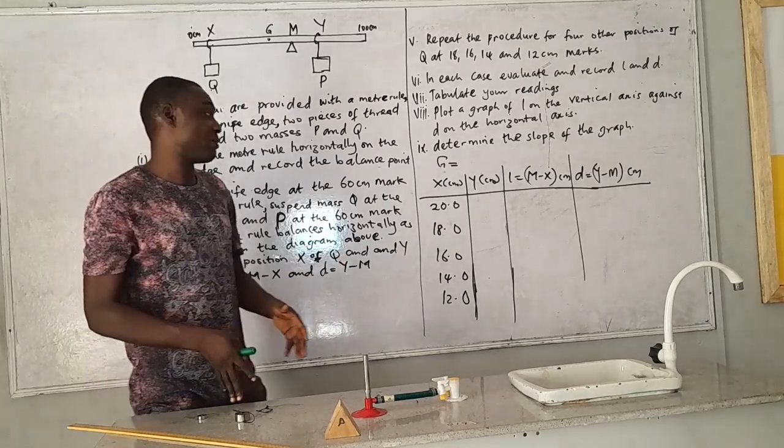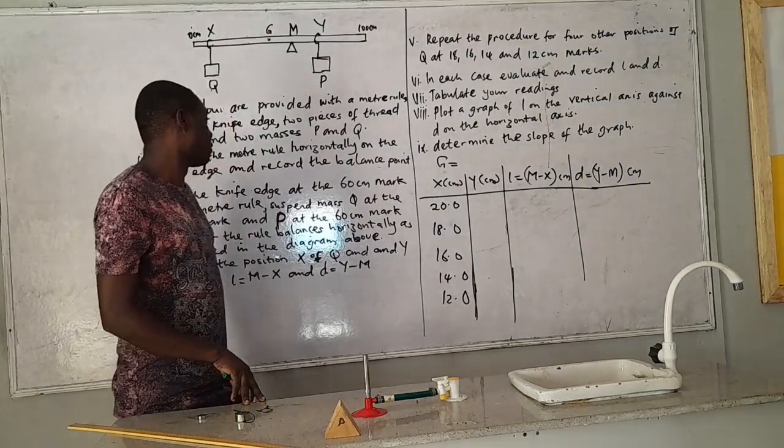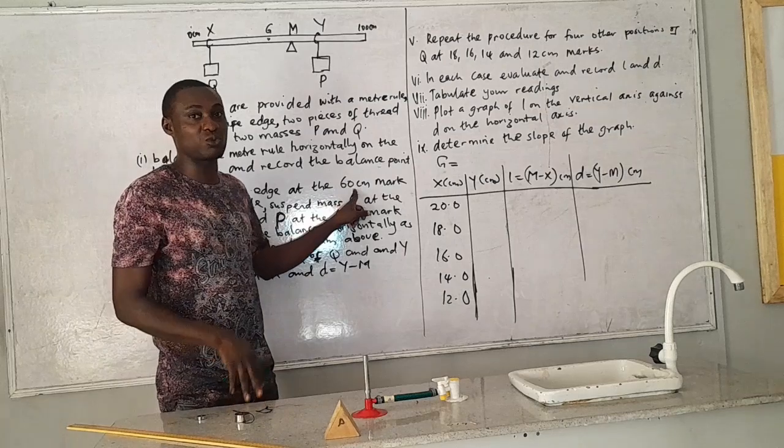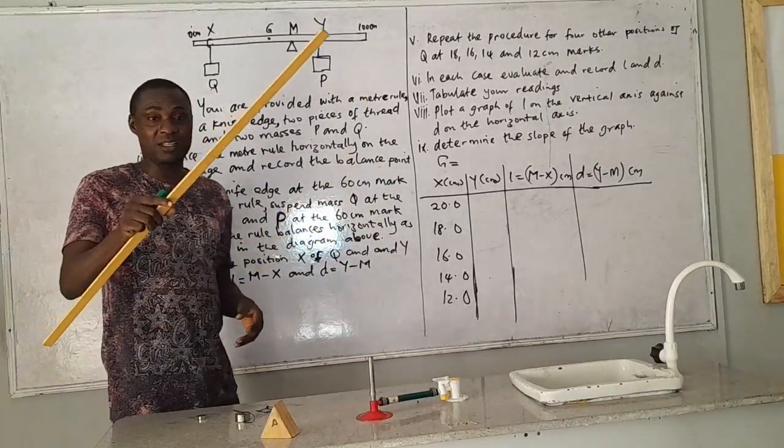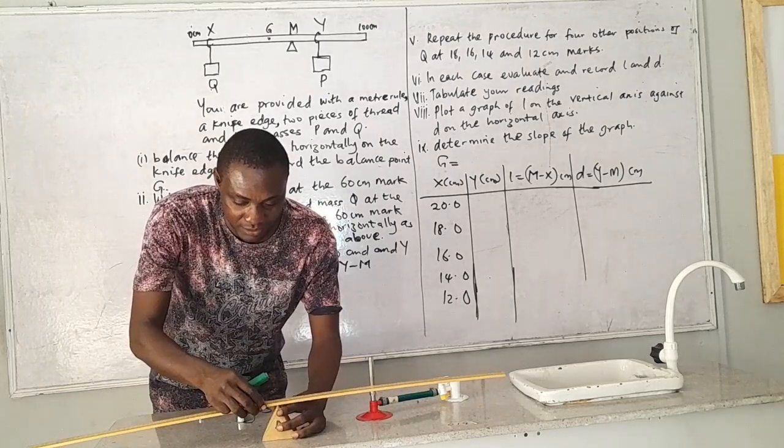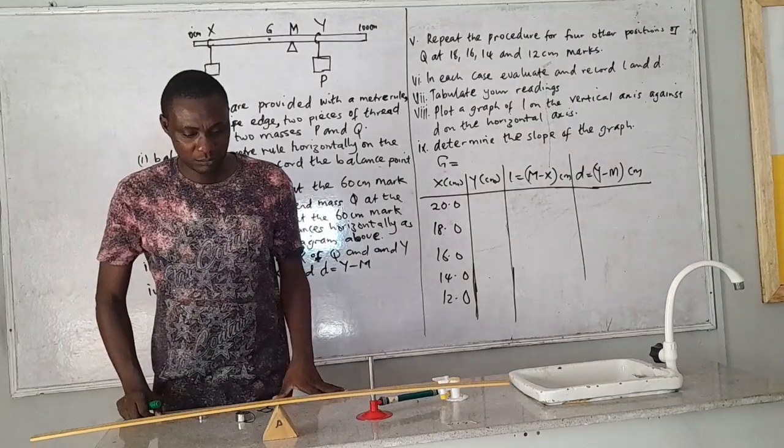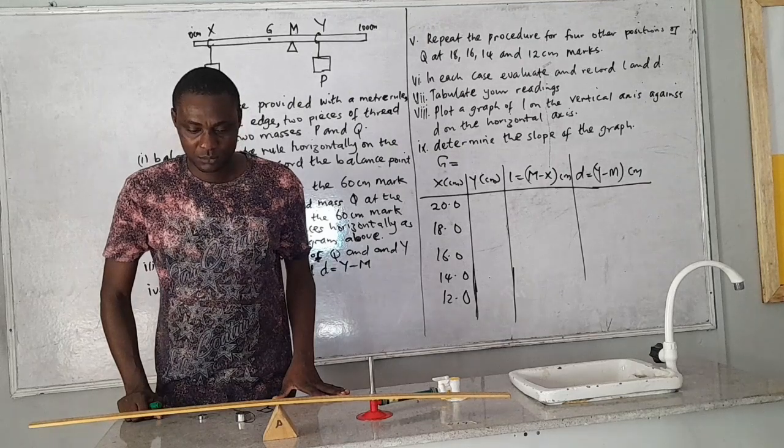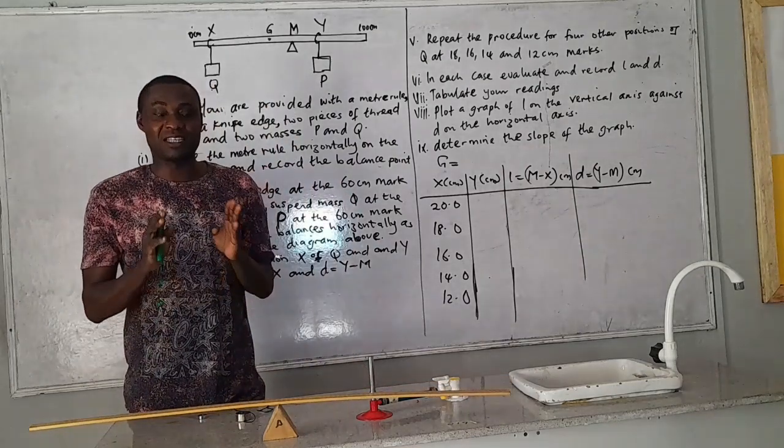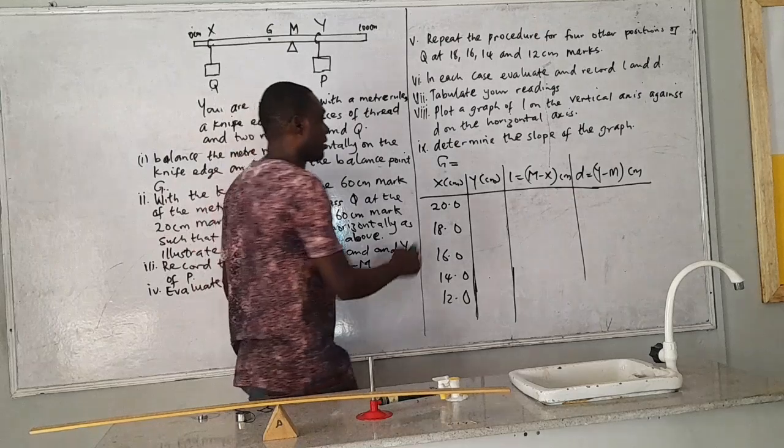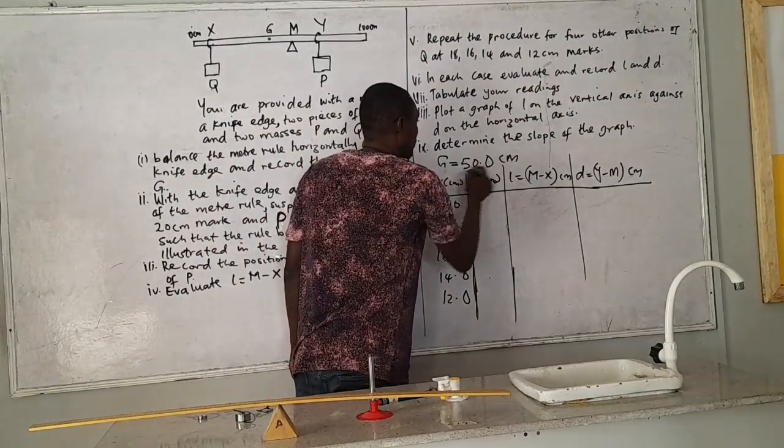Now we will start with the experiment proper. So I will not have to be going through this again. First of all, note that the knife edge is placed at the 60 cm. So we have to place the knife edge permanently at the 60 cm. Let us first of all balance this horizontally on the knife edge and get the balance point. My balance point is exactly at the 50 cm. So I'm going to write 50.0 cm. So that's my balance point.